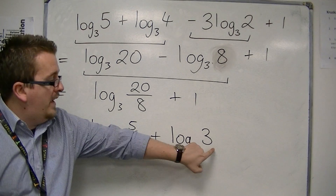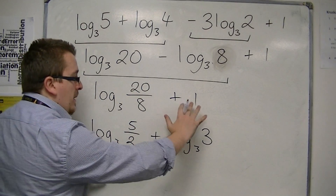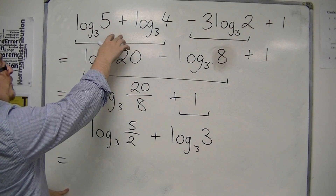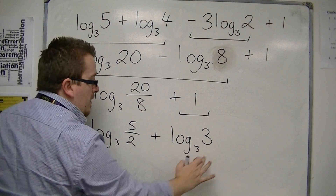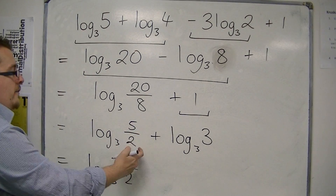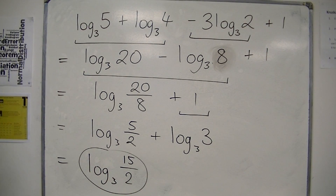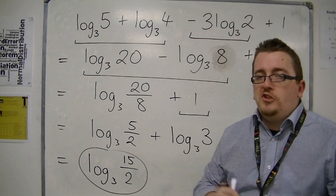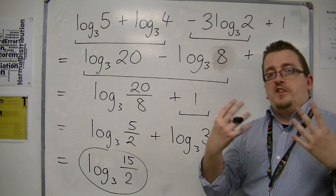As long as the base number and that number are the same, the 1 can be replaced with log base 3 of 3. So once I've replaced the 1 with log base 3 of 3, I'm back to a position where I can multiply the 5 halves by the 3. So that's log base 3 of 15 halves — 5 halves times 3. And this is as simplified as I can possibly go, and that's my final answer. It's just taking each bit piece by piece and using the laws of logarithms to simplify it down.